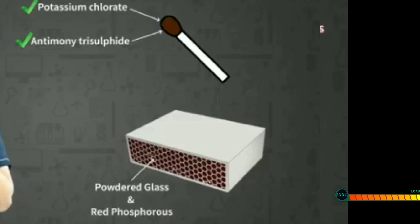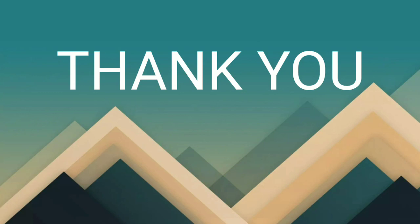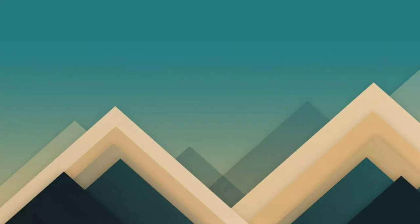When the matchstick is struck against the rubbing surface, some red phosphorus gets converted into white phosphorus. This immediately reacts with potassium chlorate in the matchstick head to produce enough heat to ignite antimony trisulfide, and then the combustion process starts. That is all for today — read this chapter very carefully.